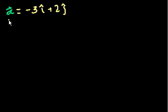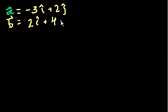And then I have vector b. And that is equal to, let's say it's 2i, 2 times the unit vector i, plus 4 times the unit vector j.